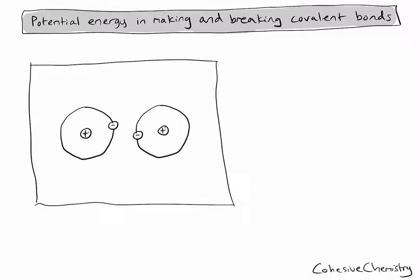Let's first consider how these two atoms will arrange themselves to find the most stable position. With an understanding of electrostatic forces, I know that my two protons in the nuclei will be attracting electrons. And I also know, according to the octet rule, that atoms tend to combine in such a way that they fill their outer shell. So for a hydrogen atom, that means they will likely arrange themselves in order to get two electrons in their outer shell, which would then be full.